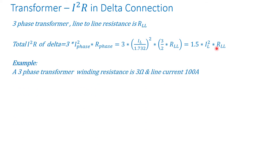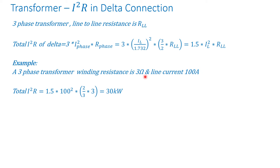Let's do a quick example: a three-phase transformer with a delta winding resistance of 3 ohms and a line current of 100 amps. Using the same example, the total I squared R is 1.5 times 100 squared. I'm given the phase resistance, and the line-to-line resistance in a delta is two-thirds of the phase resistance. Carrying out the calculation gives 30 kilowatts.